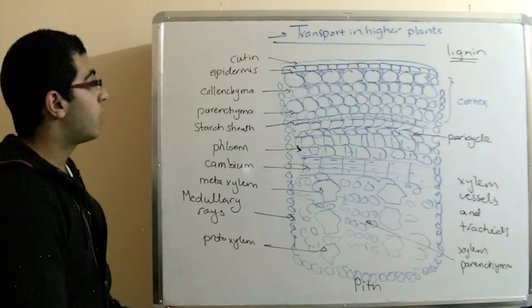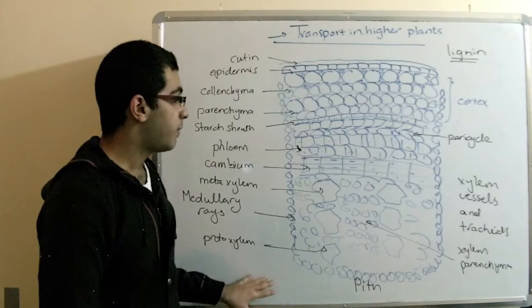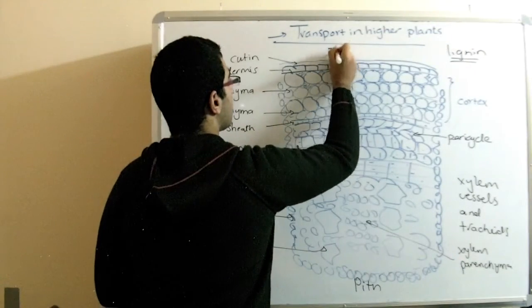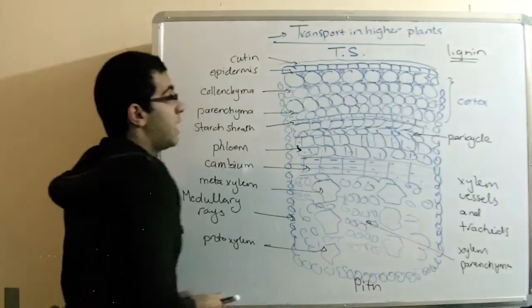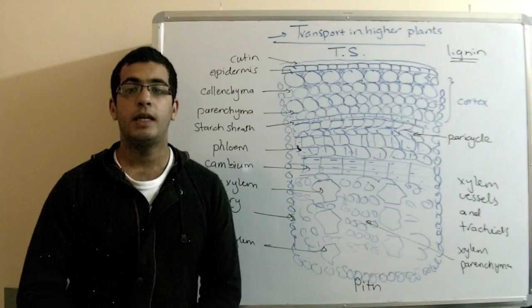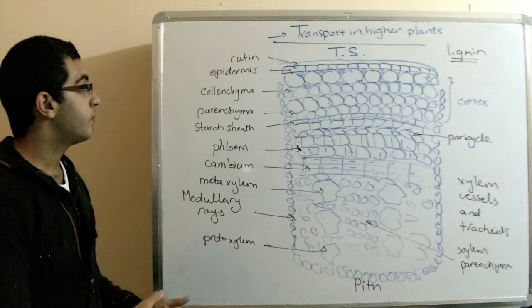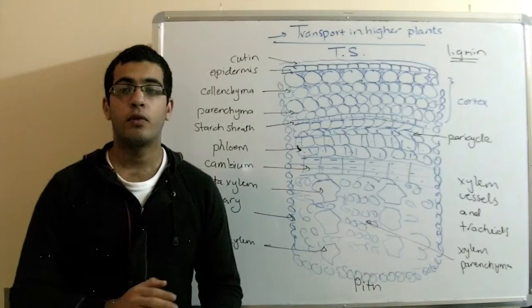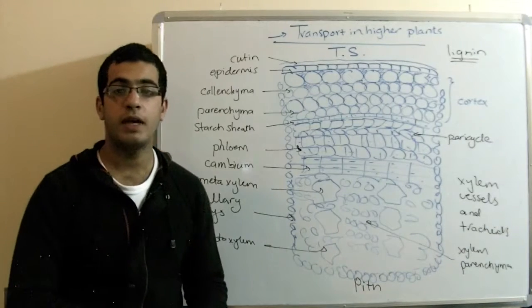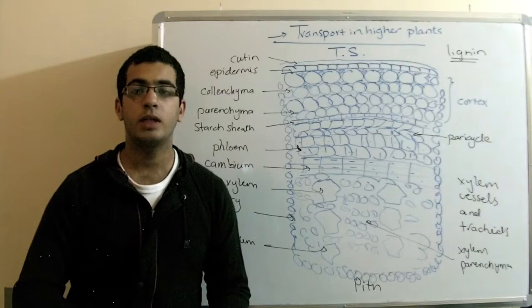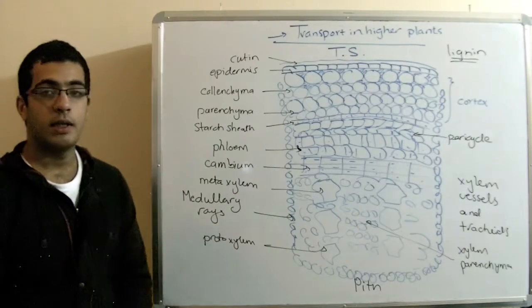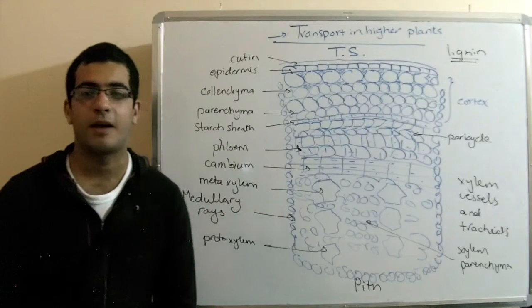And this was the transport in higher plants. It was a transverse section, a TS, in the stem of a dicot plant. The next time, we will talk about the method that the plant used for the translocation of water and mineral salts from the root hair to the leaves. And how does the water ascend through this way? And until then, I thank you for watching and see you next time.